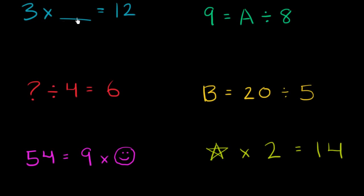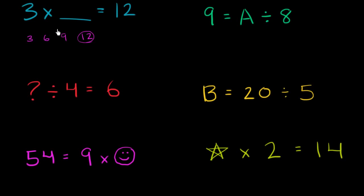So let's think through each of them. This says 3 times something is equal to 12. So let's think about what we have to multiply by 3 to get to 12. 3 times 1 is 3, 3 times 2 is 6, 3 times 3 is 9, 3 times 4 is 12. So we could say that the blank needs to be equal to 4. 3 times 4 is 12.